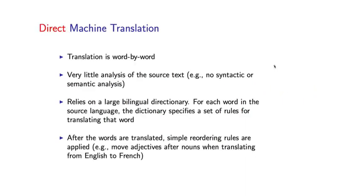So early machine translation systems made use of a method called direct machine translation. These methods essentially perform the translation process word by word. So if you have a sentence in one language, you would essentially, word by word, try to map it to words in the other language.